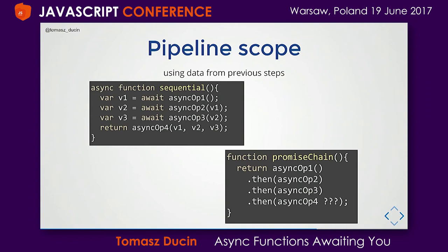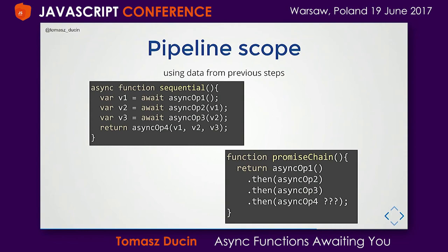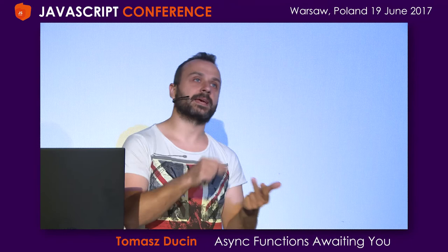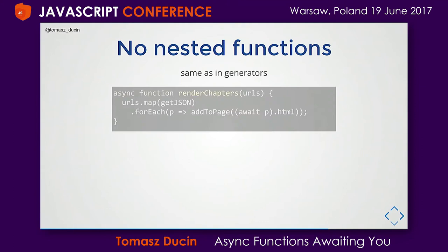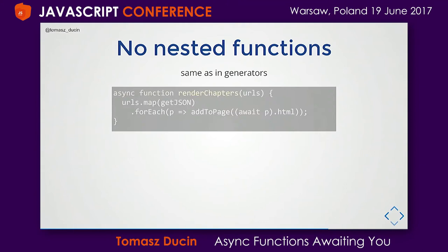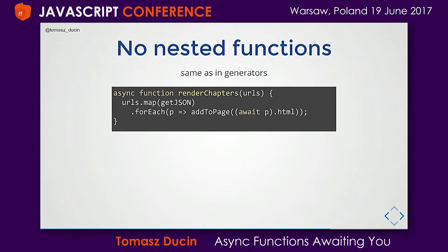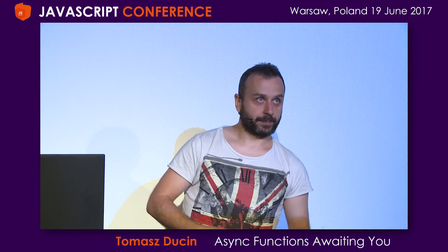Nothing is perfect, and the same applies to coroutines and async/await since they inherit from generators. In generators, we cannot yield from nested functions. If we have an async function with a forEach calling a nested function, and we would like to await or yield inside that inner function, we cannot do this.